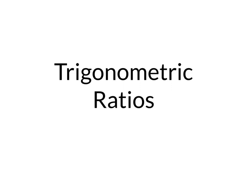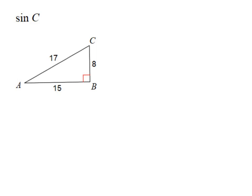In this video we will discuss writing trigonometric ratios. In this problem it is asking us to determine the trigonometric ratio for sine of C. So if I have sine of C, I first want to indicate which angle I'm dealing with. And since this is talking about angle C, I'm going to mark my angle C on the triangle.